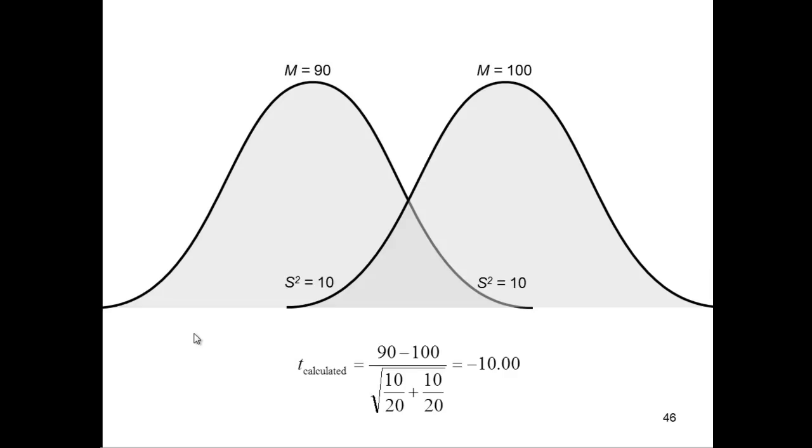And when you calculate the t-test in this case, you get a smaller calculated t-value, which means that you're less confident that there's a statistically significant difference between these two groups. And it's simply because the variances are bigger. So as variances get bigger, your t-test becomes less, your t-value gets less big.